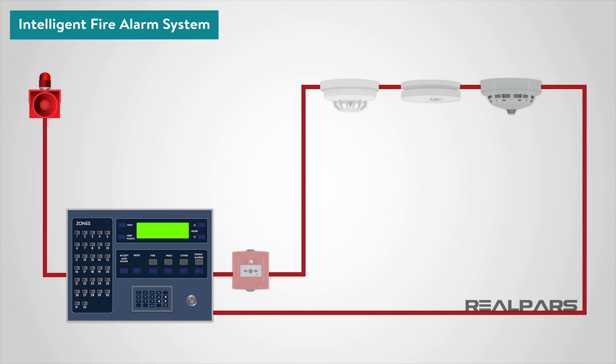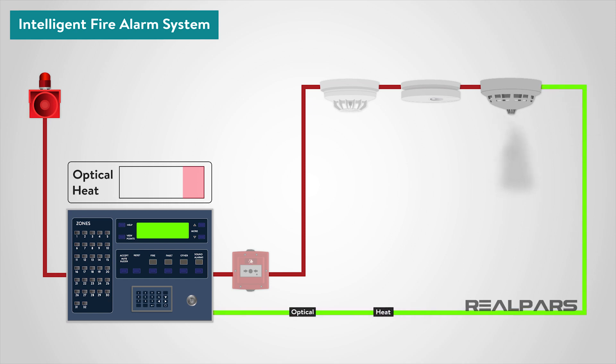Each detector evaluates the environment around it and communicates to the control panel whether there is a fire, fault, or the detector head needs cleaning. Essentially, intelligent systems are far more complex and incorporate far more facilities than conventional or addressable systems. Their primary purpose is to help prevent the occurrence of false alarms.